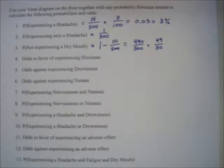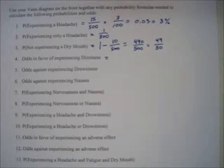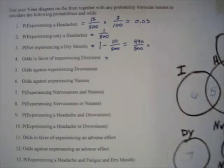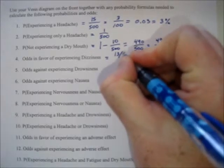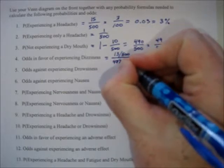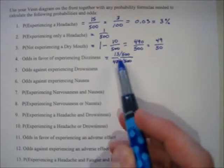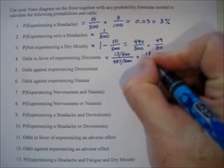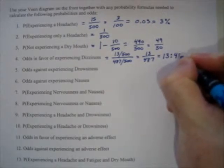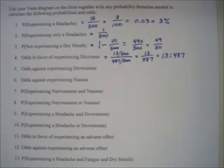The next problem: odds in favor of experiencing dizziness. Odds in favor is the probability of success divided by probability of failure. Looking for dizziness on the Venn diagram, there are 13 people who experienced dizziness, so the probability is 13 out of 500, and not experiencing it is 487 out of 500. That gives us 13 over 487, written as the odds statement 13 to 487.